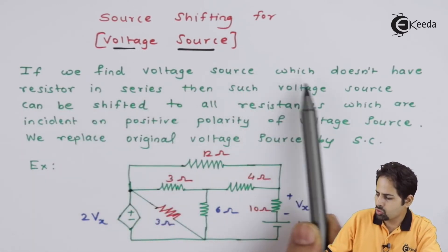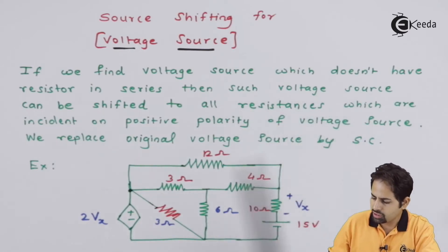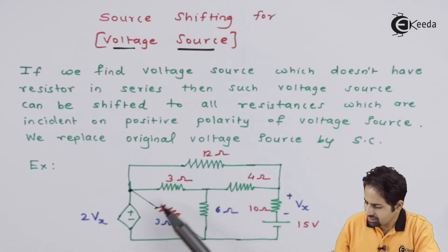If we find voltage source which doesn't have resistor in series, then such voltage source can be shifted to all resistances which are incident on positive polarity. So these are the resistances which are incident on positive polarity.